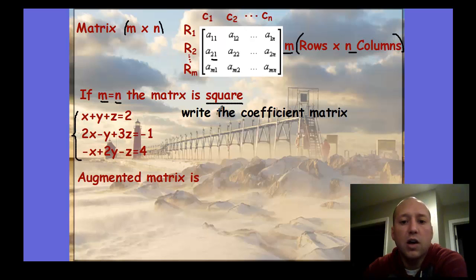This system here, we can write a coefficient matrix, which is a square matrix. To do that, we look at the coefficients of our variables. We have 1x, 1y, 1z, 2x, negative 1y, 3z, negative 1x, 2y, and then negative 1z. So those numbers would create our coefficient matrix. I'm writing each of the equations as a row.